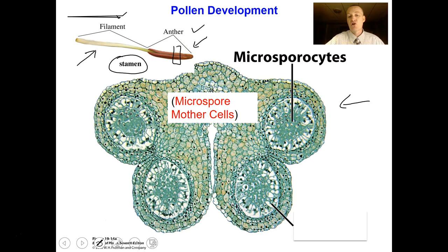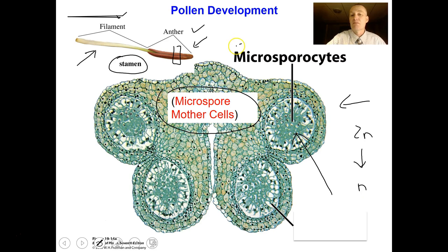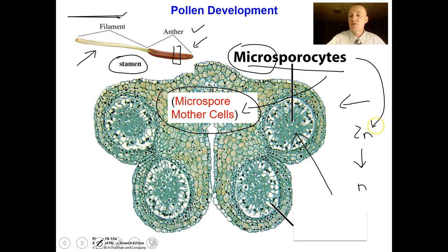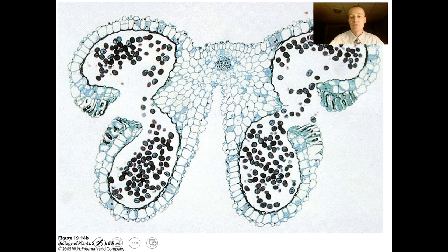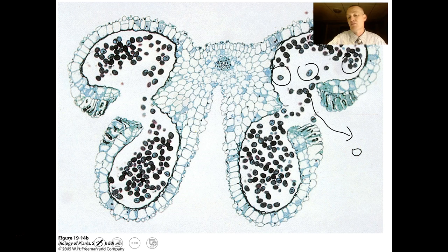Inside the anther there are cells called microsporocytes — another name for microspore mother cells. These microsporocytes are diploid and have to undergo meiosis to produce haploid microspores. That occurs at the head of the anther. Once these microspores are somewhat mature and ready to be dispersed, the pollen grains will be released. Sometimes they stick to pollinators, sometimes they float in the wind, or even travel in water — there are different ways pollen can get from one flower to the next.